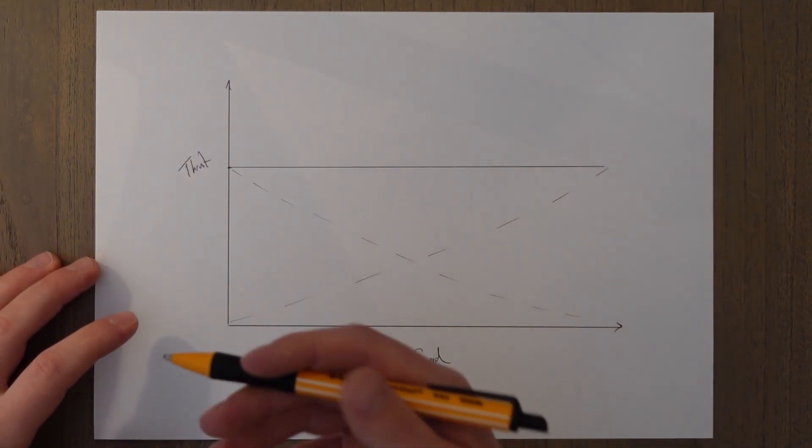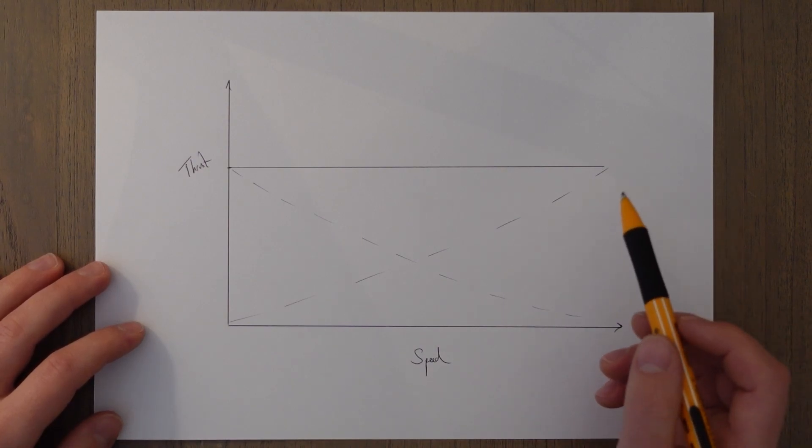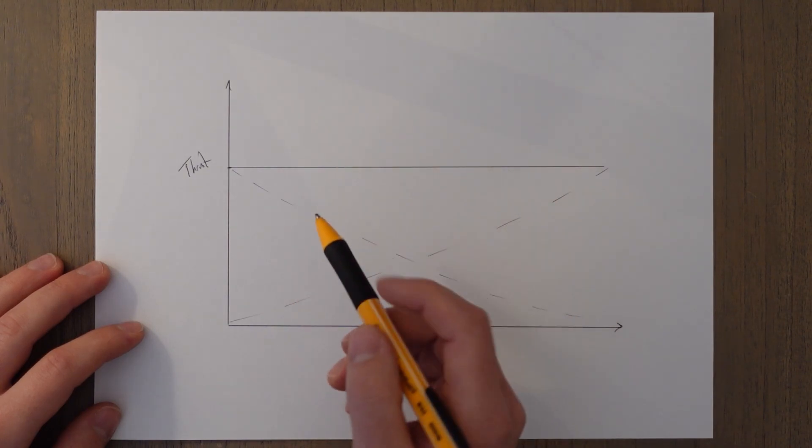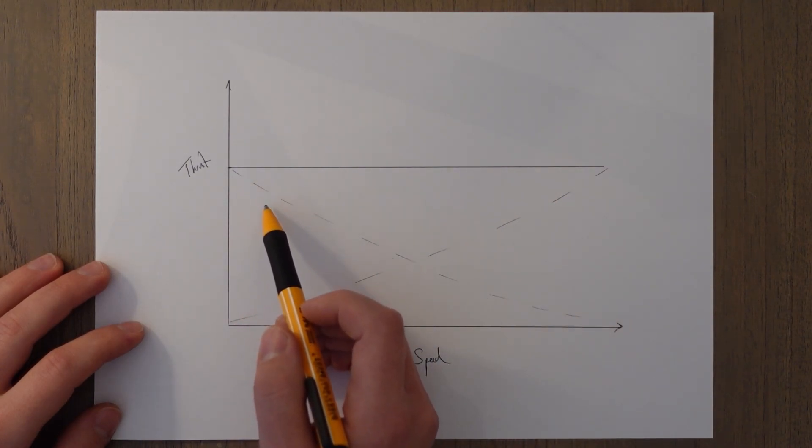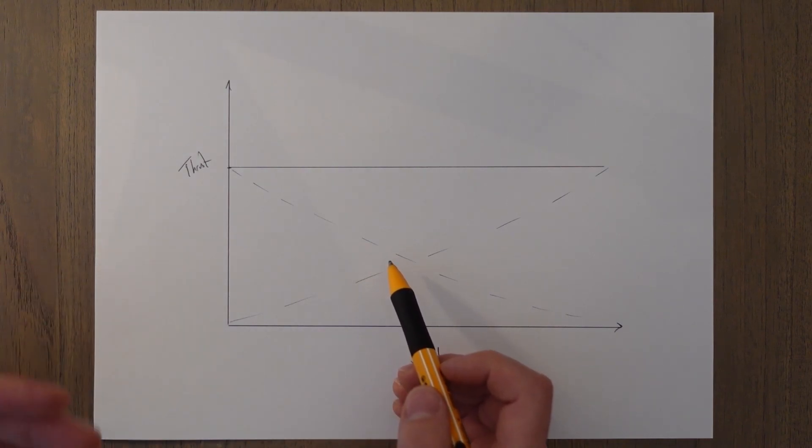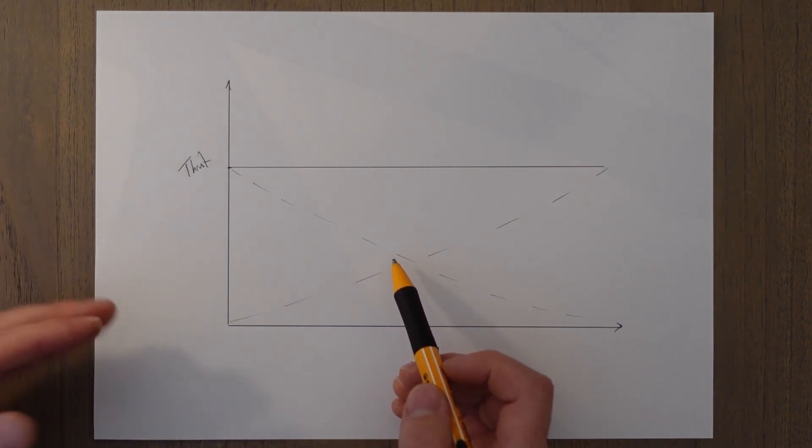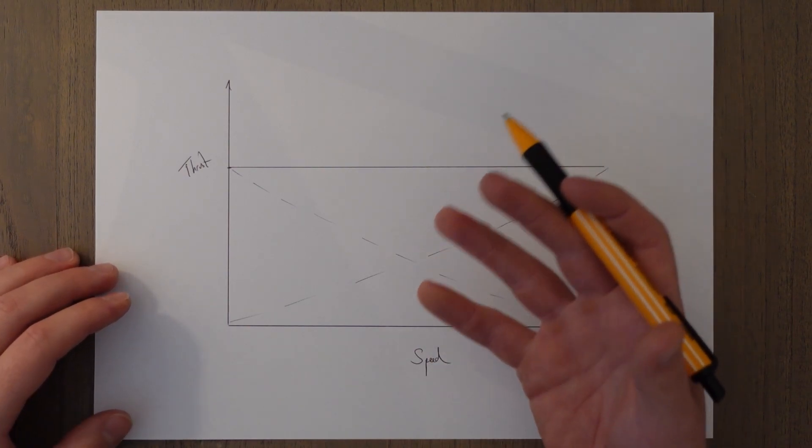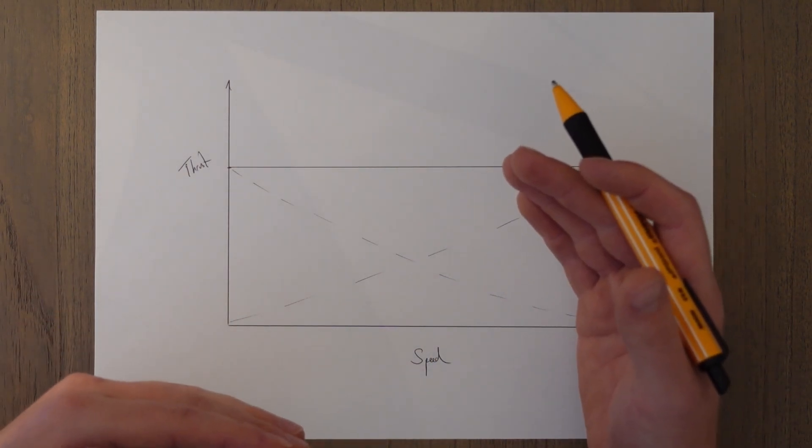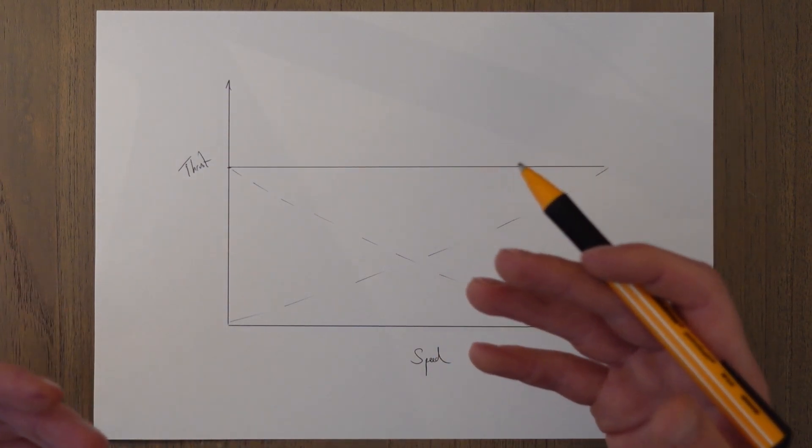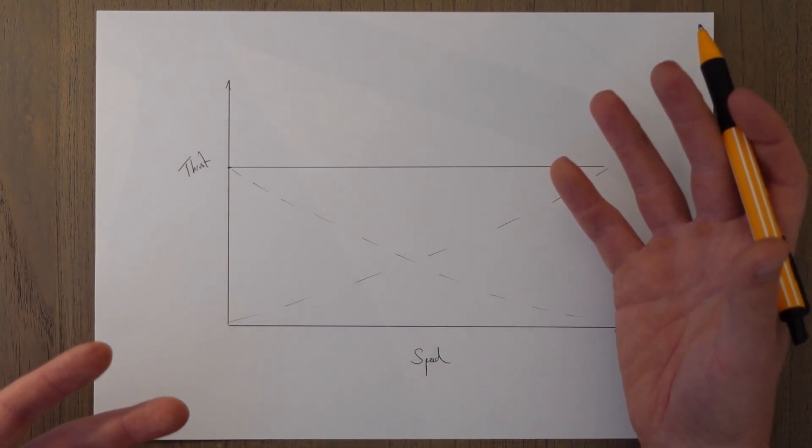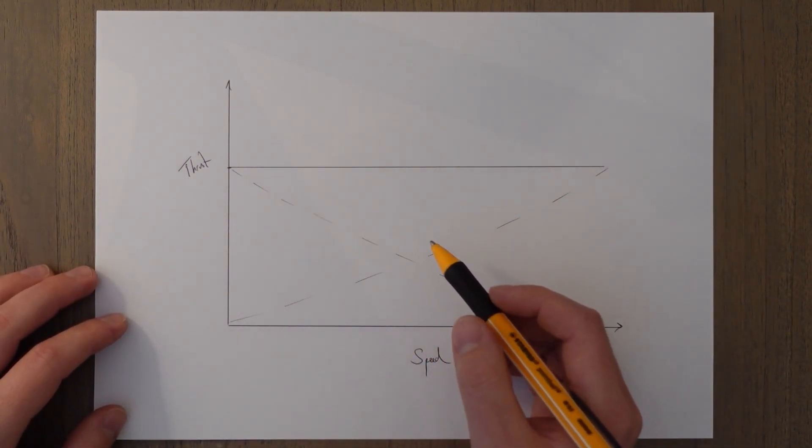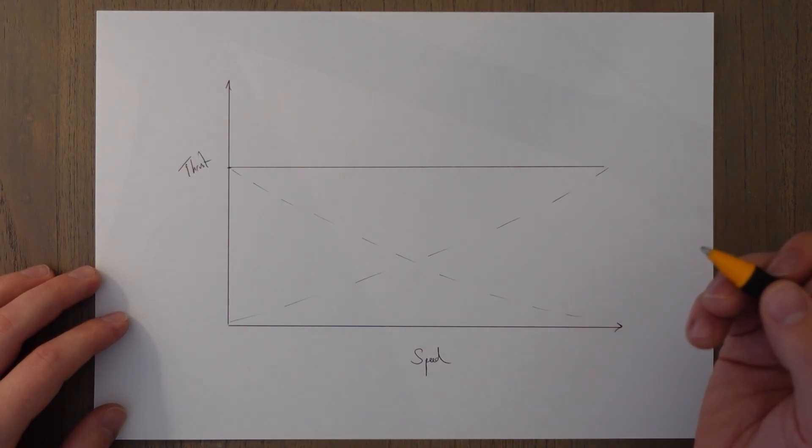There are certain things to consider when talking about the thrust output of the engines. The first we're going to look at is the forward speed. As we start to travel faster we start to lose thrust. This is because we are generating thrust by accelerating a mass of air rearwards, and as the input speed of the air increases the output speed of the air remains constant so there's not that much difference. That means that as we travel faster there's not as big of a difference and we aren't accelerating it as much. We have a lower amount of thrust produced as a result and we call this intake momentum drag.